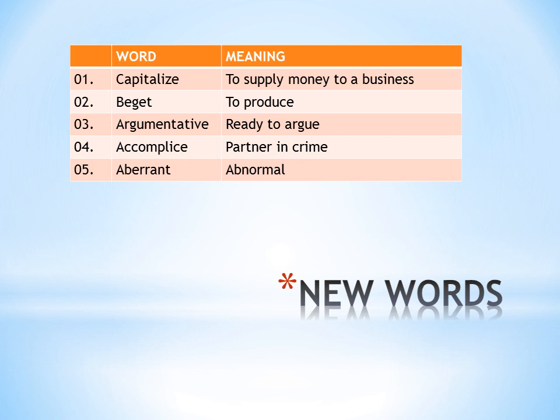Second: bigot, meaning a narrow-minded or intolerant person. Third: argumentative, meaning ready to argue or discuss things. Fourth: accomplice — like two people committing a crime together, the partner in crime is the accomplice. Fifth: aberrant, meaning abnormal. Remember that words starting with 'a' often carry a negative or opposite meaning. Regular revision is most important to remember these long-term.